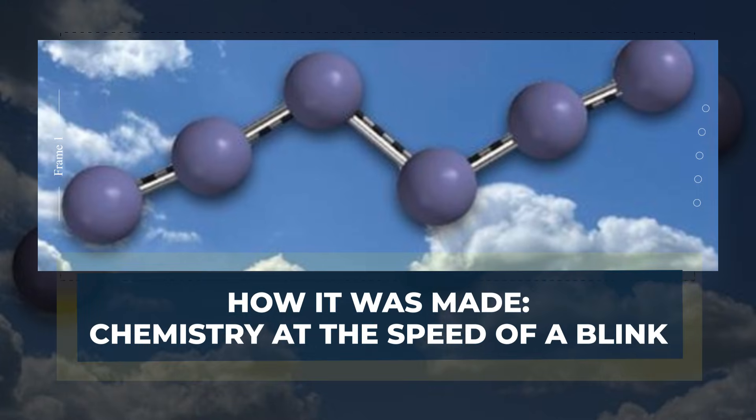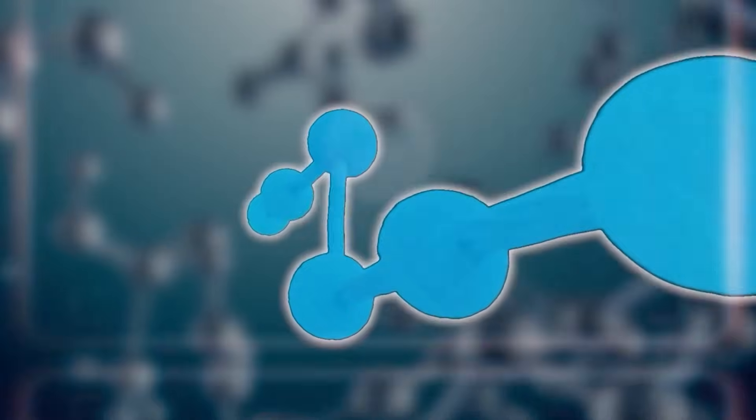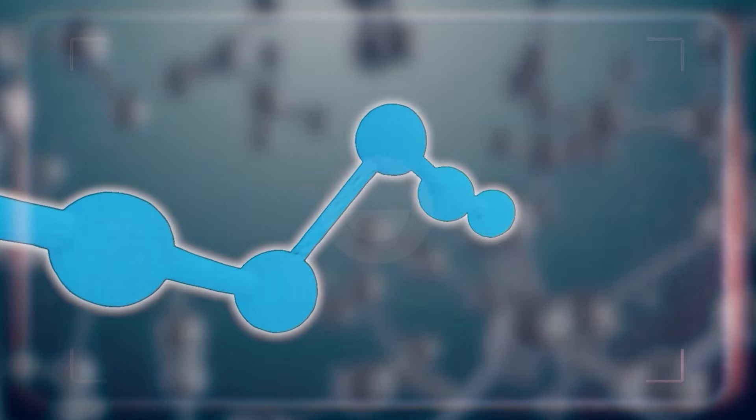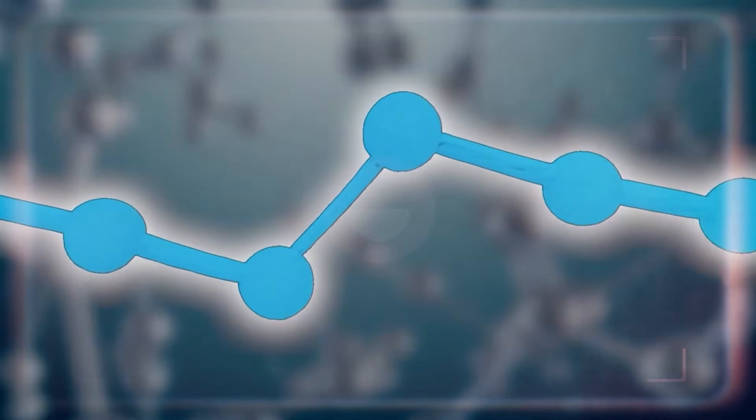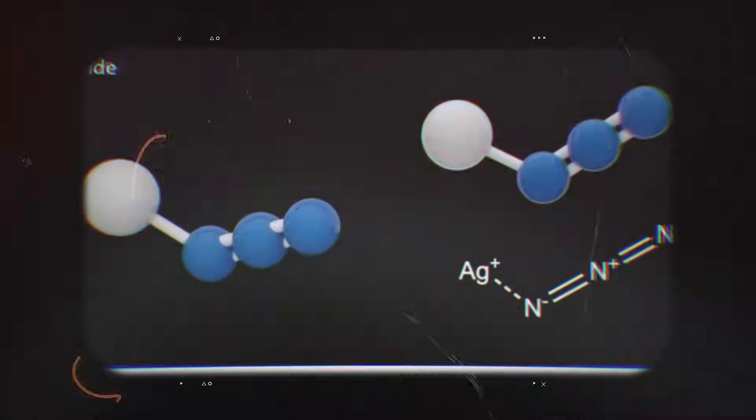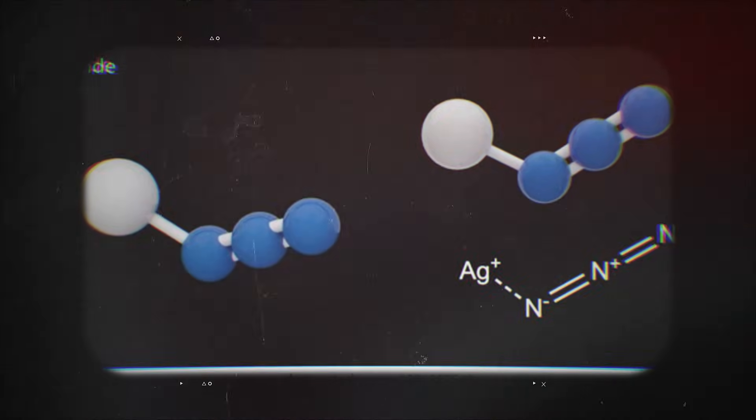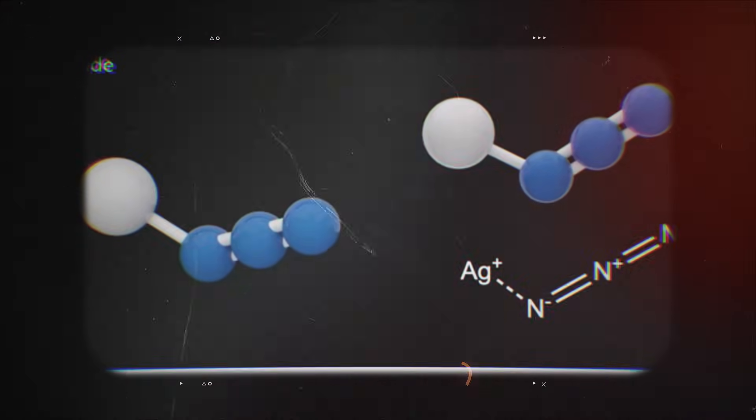How it was made: chemistry at the speed of a blink. Making N6 is a race, because the clock starts the moment the molecule forms. The team used silver azide as a starting compound, then reacted it with chlorine gas or bromine.